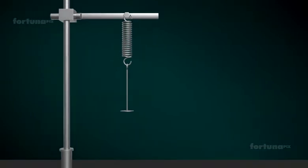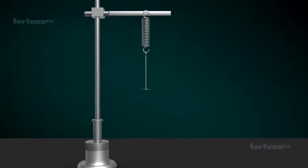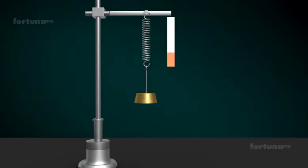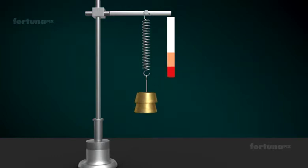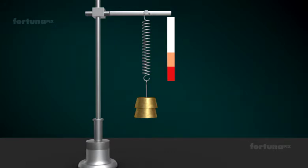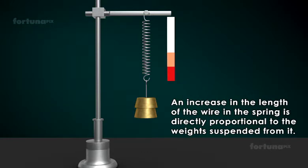Let's apply this law to our spring. Hang a one kilogram weight from the spring and note the stretching. Add a second kilogram weight and note the stretching. We can find that when the weight is doubled, the spring will stretch twice as much. This shows us that an increase in the length of the wire in our spring is directly proportional to the weights suspended from it.